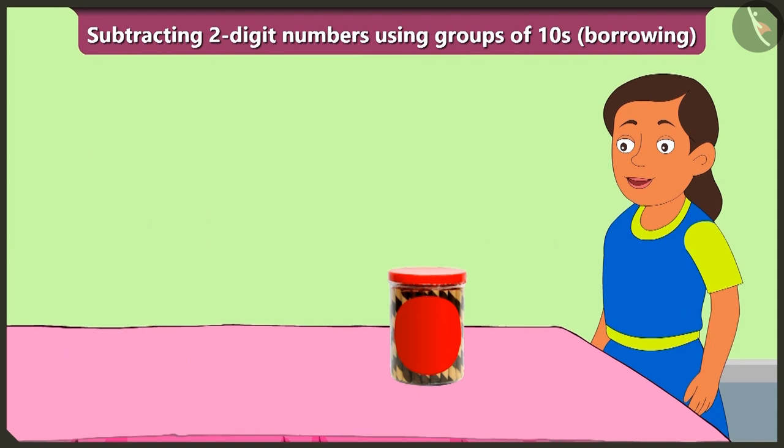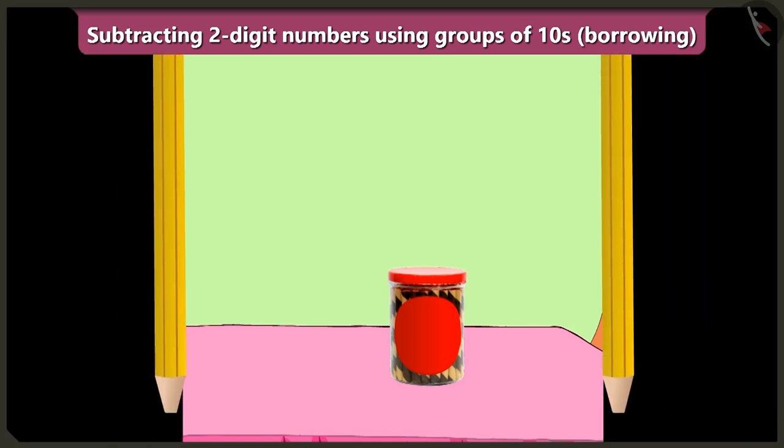Look, Bubbly's mother also bought some chocolate sticks for Bunty and Bubbly while returning home from the market. Oh look, it seems that Bubbly is very happy on seeing the chocolate sticks.